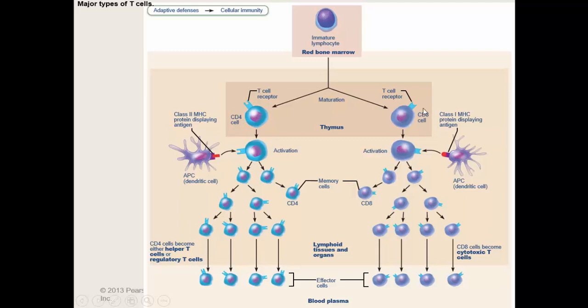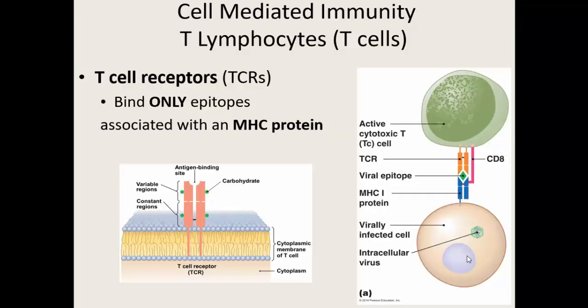If you see CD8, it recognizes class one and those cells are going to become cytotoxic cells. T cells, just like B cells, do have T cell receptors — different shapes though. B cell receptors look like Y's with arms that can bind onto epitopes and antigens.